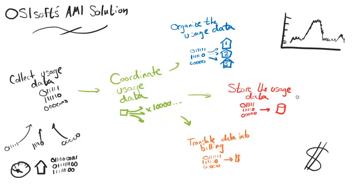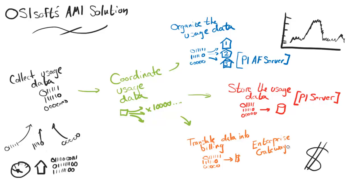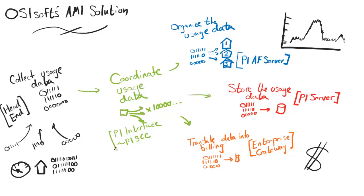Now let's name all these pieces. Storing the usage data will be taken care of by a PI Server — OSIsoft's classic workhorse and the industry standard for storing lots of process data. Organizing the usage data will be taken care of by a PI AF Server, which specializes in giving meaning and context to all the data stored in the PI Server. A machine called the Enterprise Gateway will take care of translating the usage data into billing. Software called the head end — and there may be many different companies that produce a head end product — will collect the usage data. Then there will be a PI interface, specifically the PI Smart Container Connector Kit, which will coordinate all this usage data. It's essentially a super PI interface, collecting data from the head end and distributing it to the other servers.